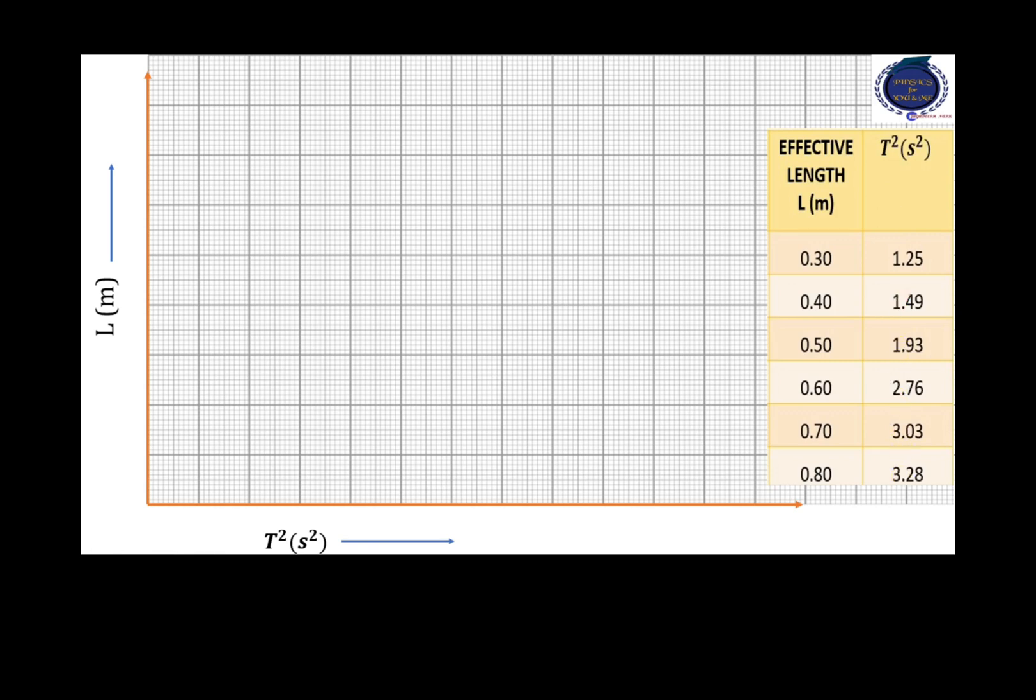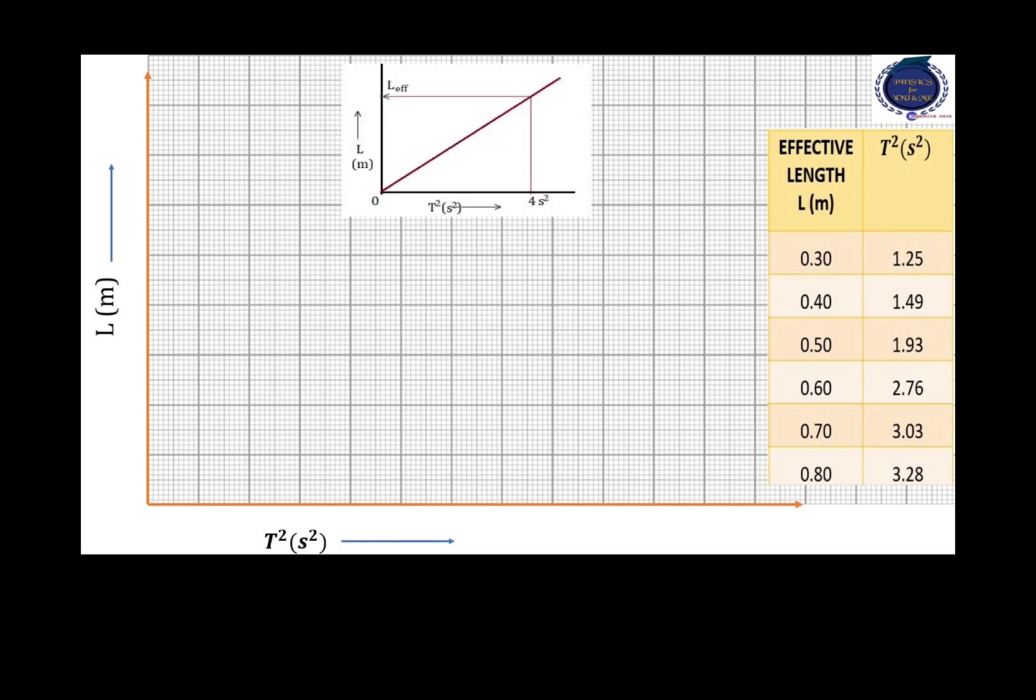To decide the scale of the given graph, we need to consider the nature of the graph. Observe the nature of the graph. It is a straight line starting from the origin. And the maximum value along the x-axis is 4 seconds square. Similarly, if you know the theory, then we will know that the length of the second pendulum is 1 meter, which is the maximum value along the y-axis. Therefore, while deciding the scale, we have to consider how much distance is available for us along the y-axis and also along the x-axis.